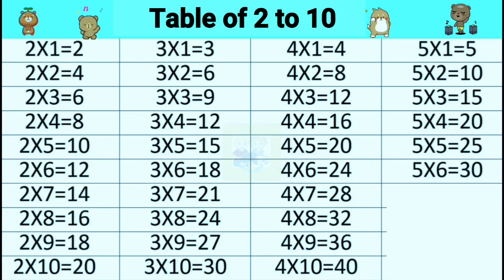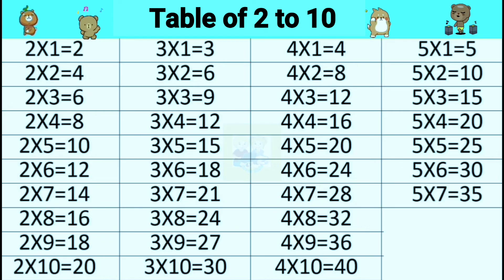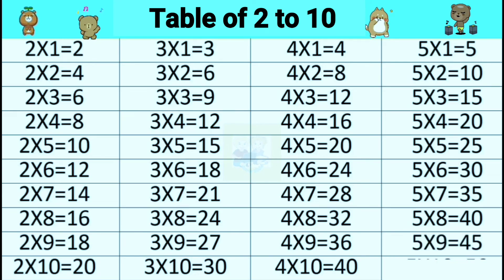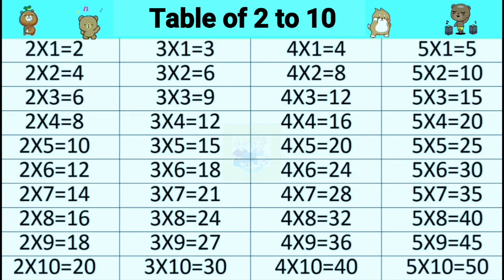Five sixes are thirty. Five sevens are thirty-five. Five eights are forty. Five nines are forty-five. Five tens are fifty.